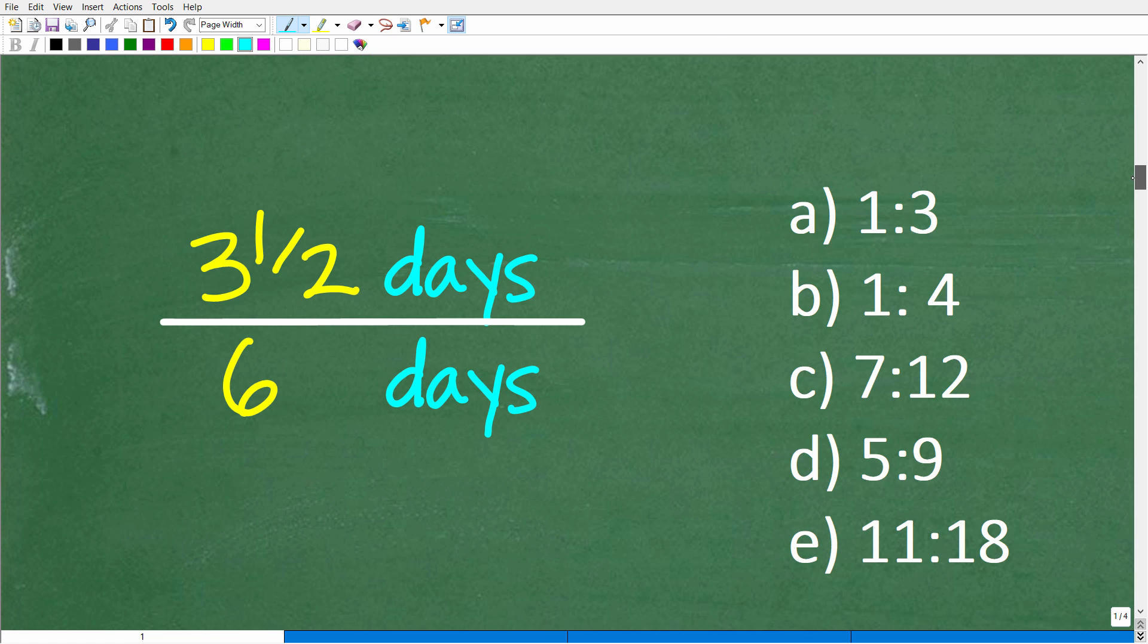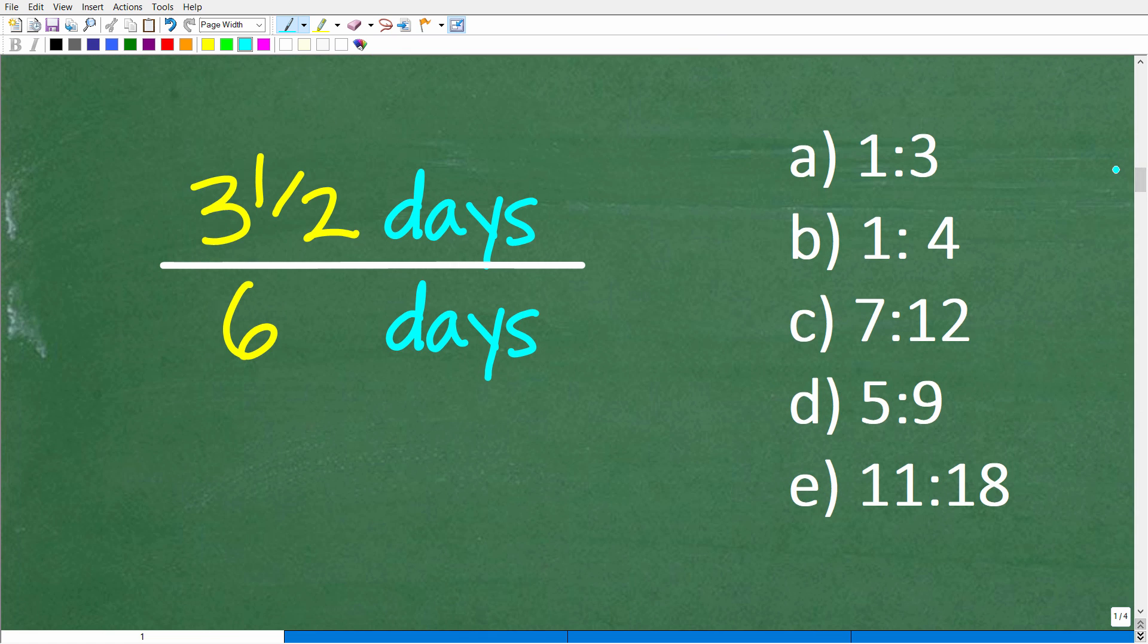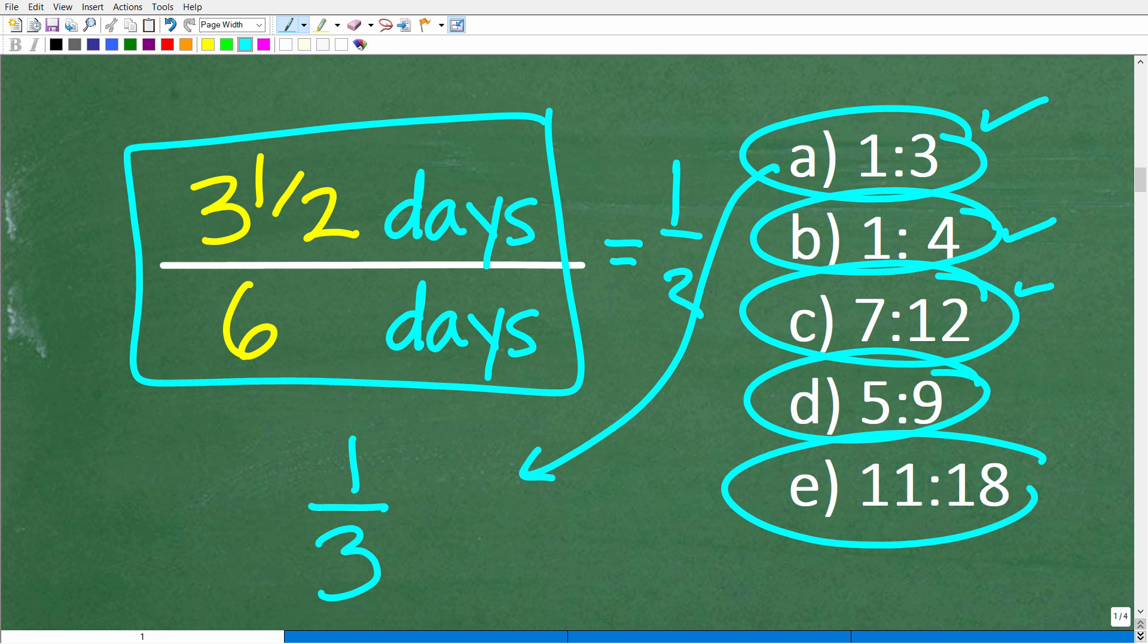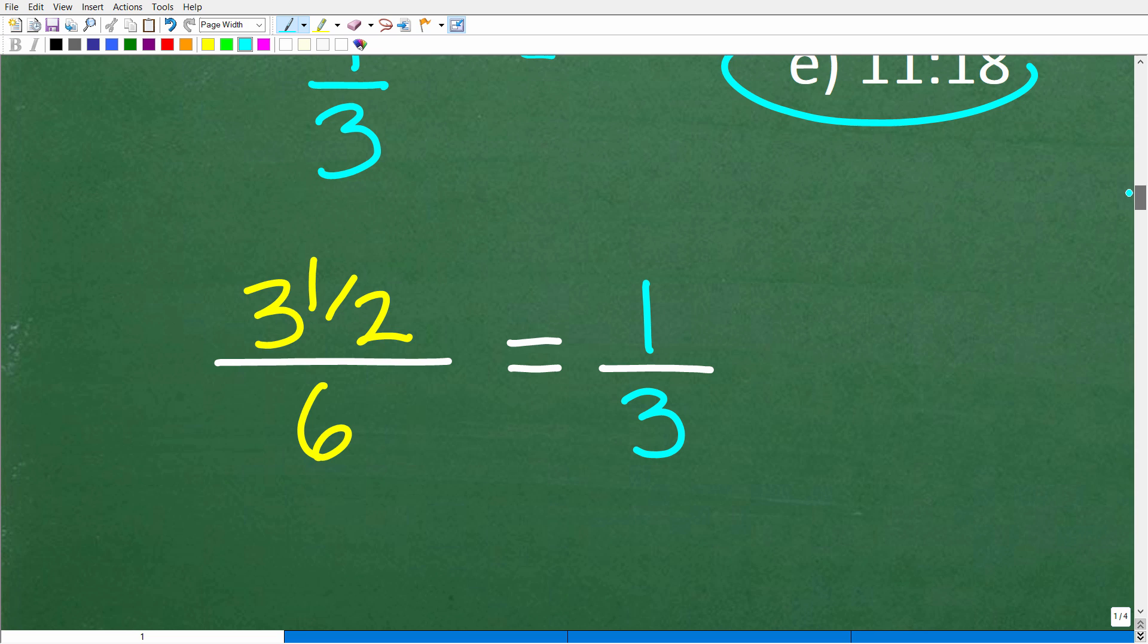How do we approach this problem? Now that we understand what a ratio is, we do have a multiple-choice question here, and that's going to make things a lot easier. So effectively, what we're looking for is which one of these ratios is the same as this fraction? So we could express these ratios as fractions. We're trying to determine which ratio is equivalent to 3½ days to 6 days. And this is going to bring us to another very important property of something called a proportion.